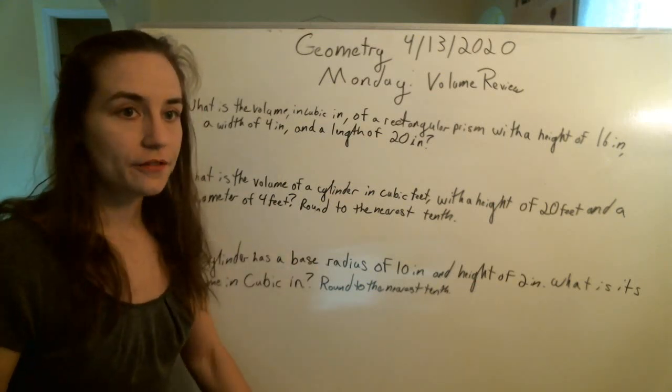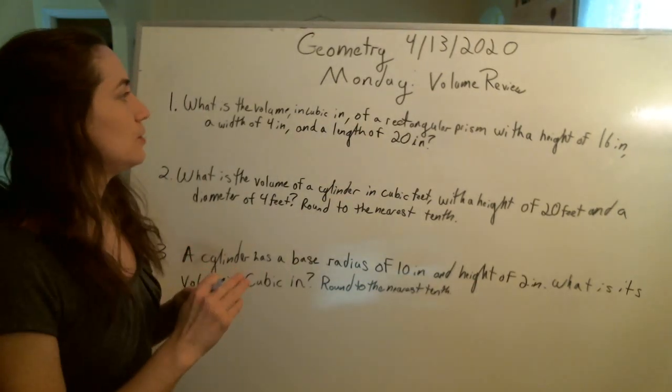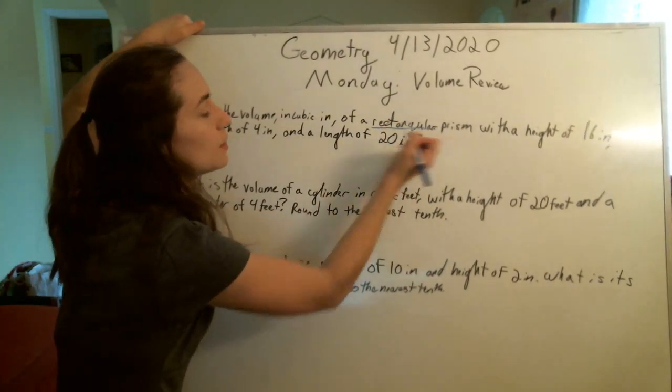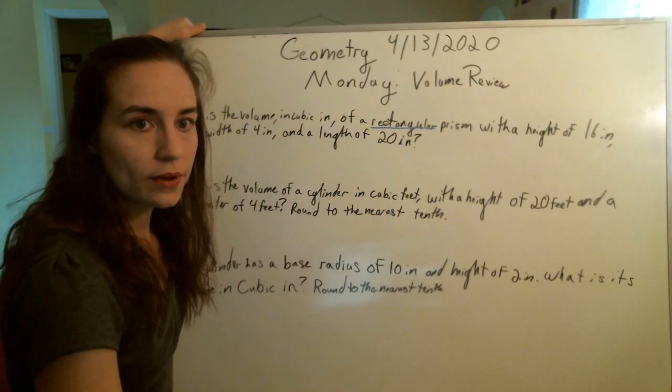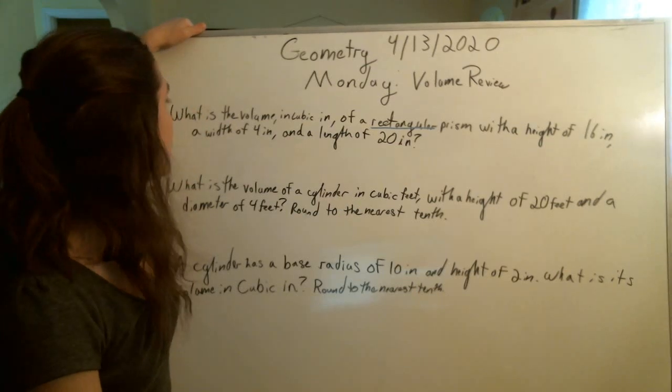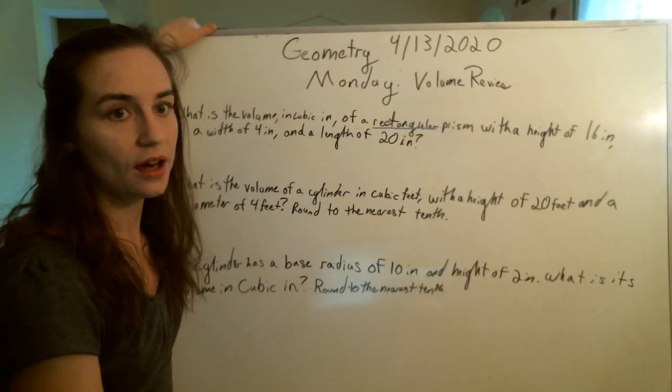The first question is, what is the volume in cubic inches of a rectangular prism with a height of 16 inches, a width of 4 inches, and a length of 20 inches?